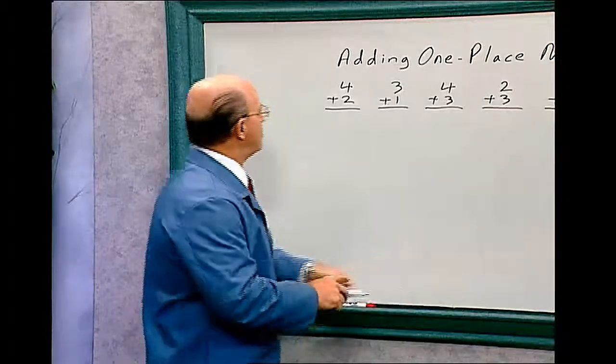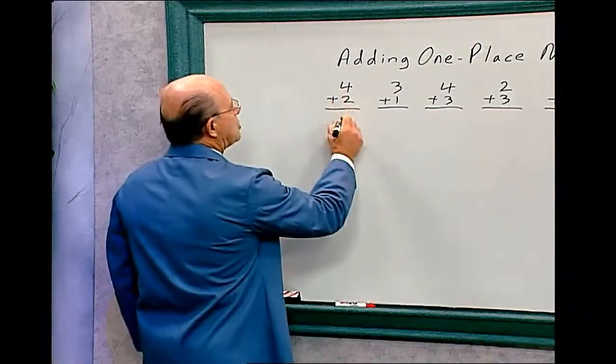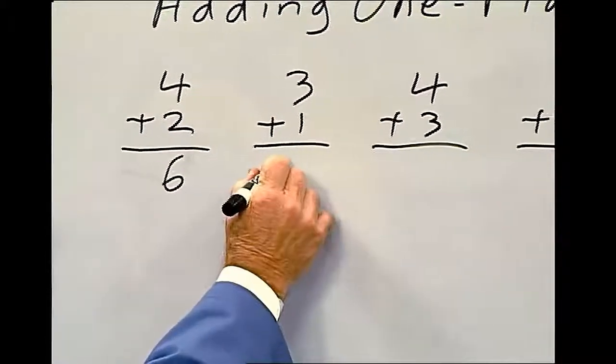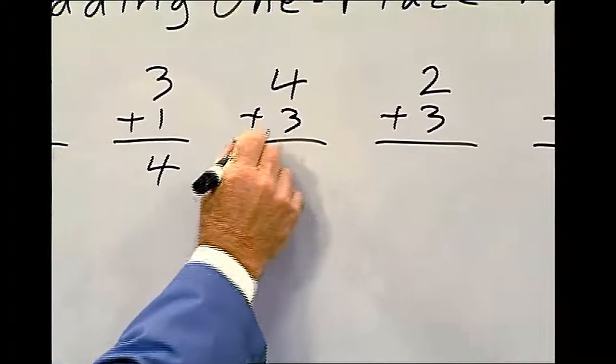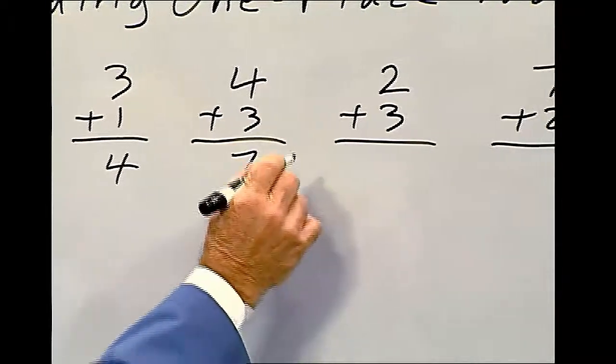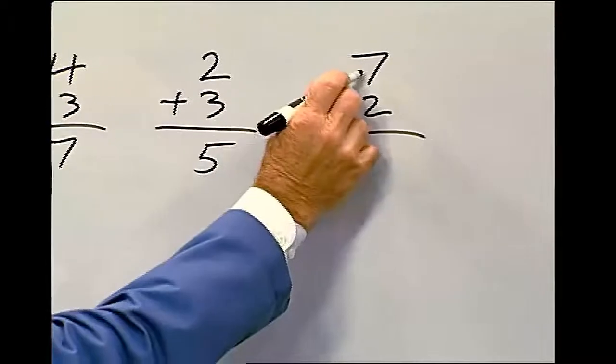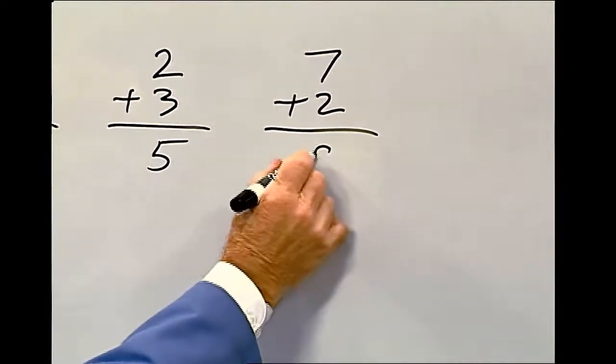Let's add these numbers. 4 plus 2 is 6. 3 plus 1 is 4. 4 plus 3 is 7. 2 plus 3 is 5. And 7 plus 2 is 9.